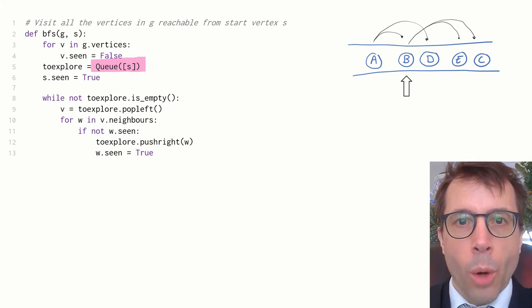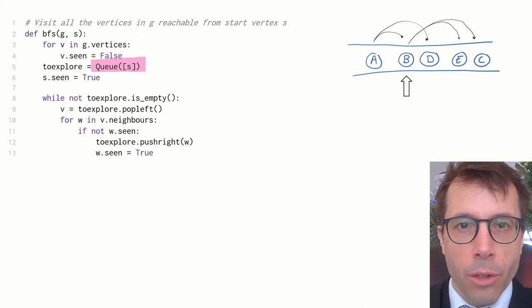First, this line here where we declare a queue. A queue stores a list of items; it lets us add them on one side and take them out on the other, so it's exactly what we need to store the list of vertices.